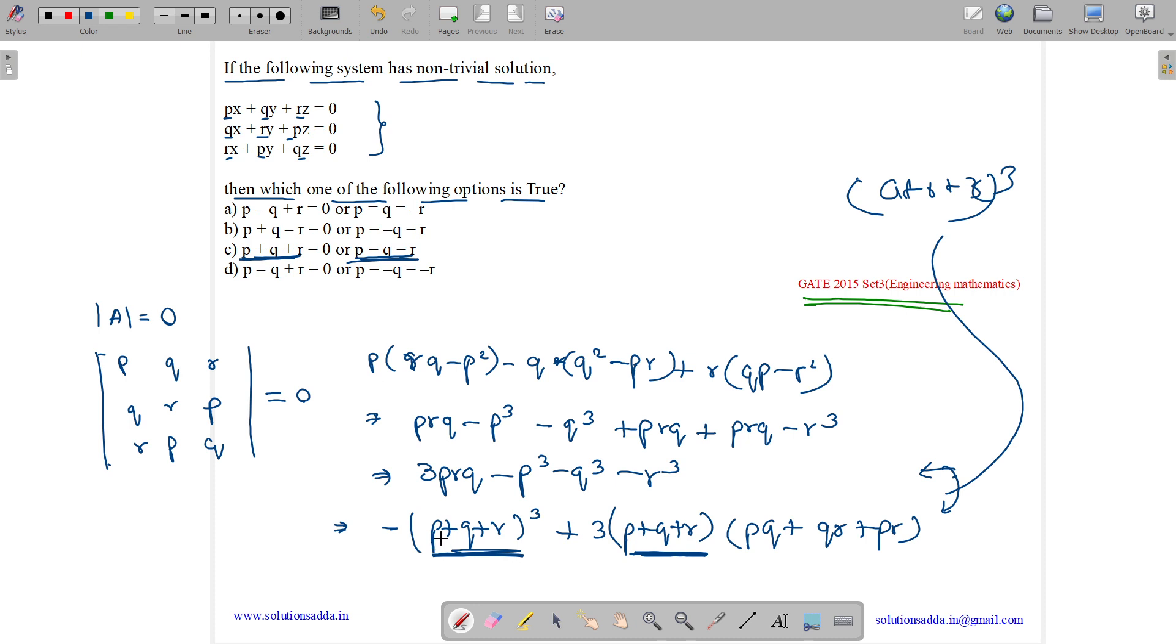If P equals to Q equals to R, we get this equals to minus, let P equals to Q equals to R equals to X. Then this becomes minus X plus three X whole cube plus three into three X into three X square. What happens? We have X plus X plus X minus three X whole cube. And here we have X plus X plus X, which is three X into three.